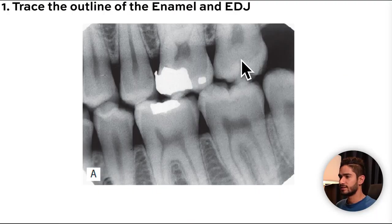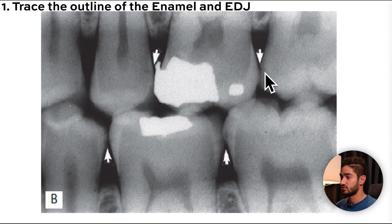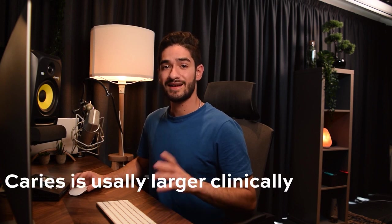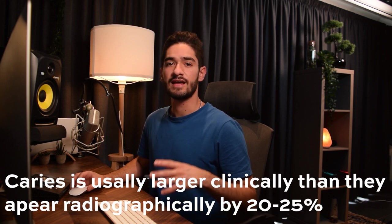Weights has a 10-step approach but I've narrowed it down to five. As you practice and see more radiographs this becomes much faster. The first step is to trace the outline of the enamel and the EDJ and note any alterations in shape which might indicate a possible cavitation. Trace the edges and look for radiolucencies — on this radiograph there's not much, but if you zoom in you can notice tiny enamel lesions you might have missed. Also remember that caries are usually larger clinically than they appear on the radiograph — around 20 to 25 percent worse clinically.